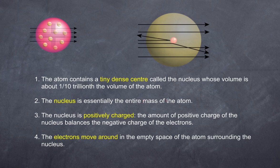Claim number two: the nucleus is essentially the entire mass of the atom. The nucleus is positively charged. The amount of positive charge of the nucleus balances the negative charge of the electrons. And finally, the electrons move around in the empty space of the atom surrounding the nucleus.